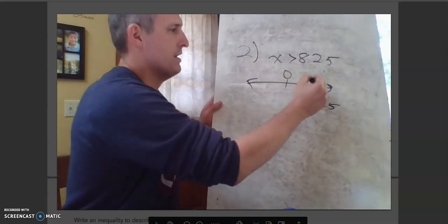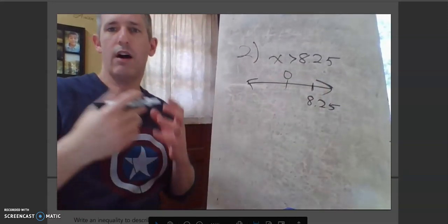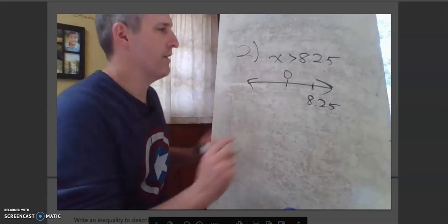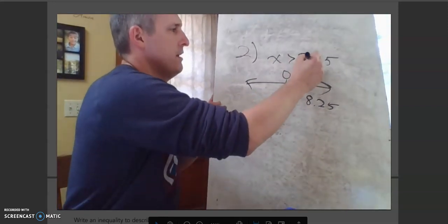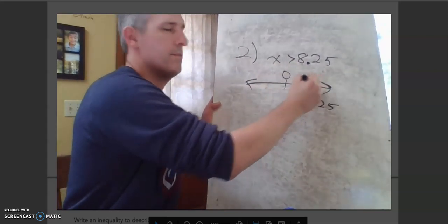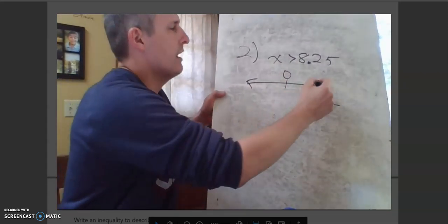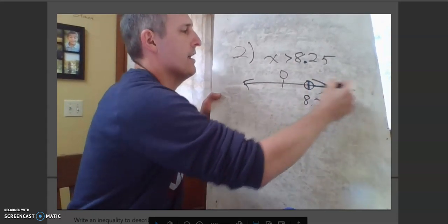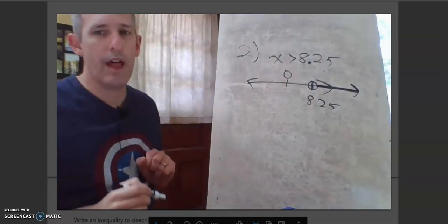So x is greater than 8.25. Can it be 8.25? The answer would be no. So I put a circle there and I'm going to be on the greater side. So I'm going to go that way.